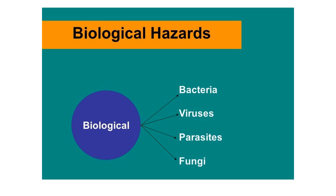The first is biological hazards. As the slide mentions, biological hazards are caused due to bacteria, viruses, parasites, and fungi — anything related to microbes. Examples include bacterial foodborne intoxication caused by Bacillus cereus, Campylobacter jejuni, Clostridium botulinum, and Escherichia coli. We also have fungal toxins such as mycotoxins.